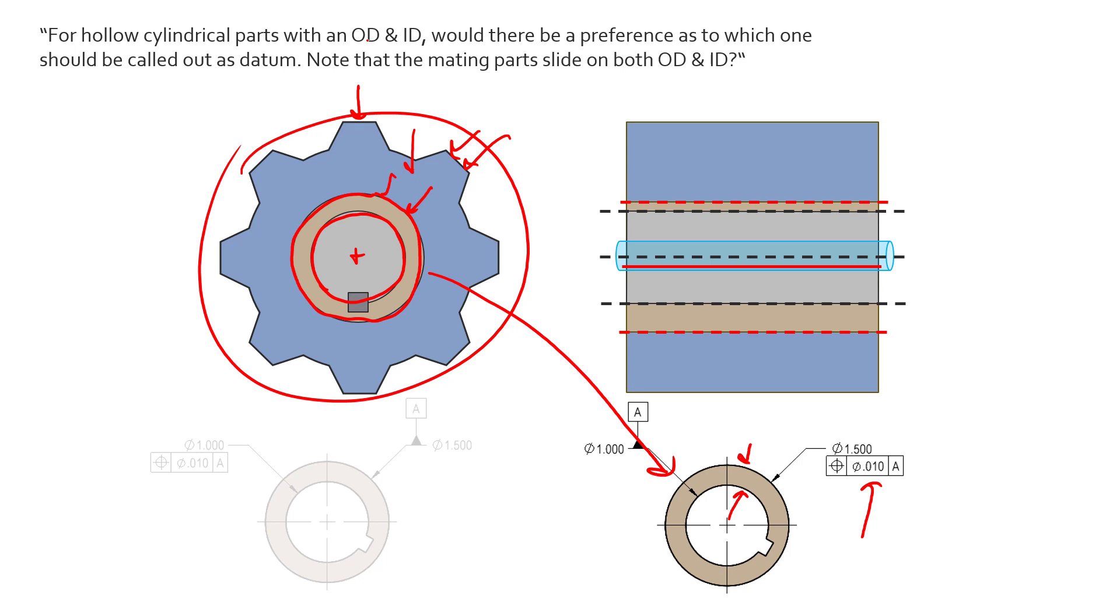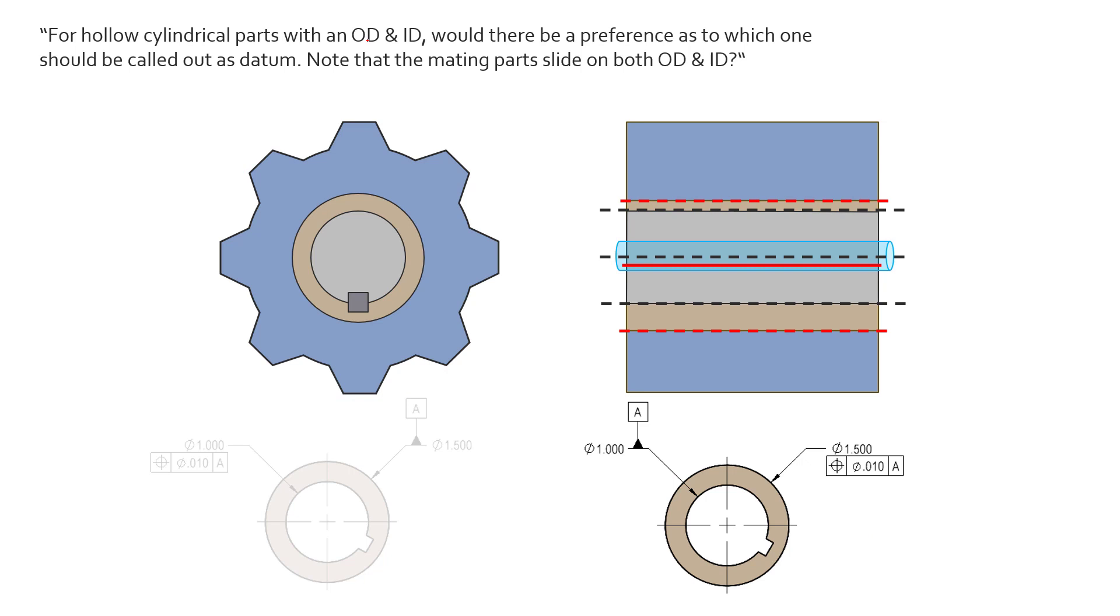With this setup, we can still see that we have enough information to understand the worst case stack up in our assembly regardless of which feature we use in this scenario, internal or external diameters as a datum.